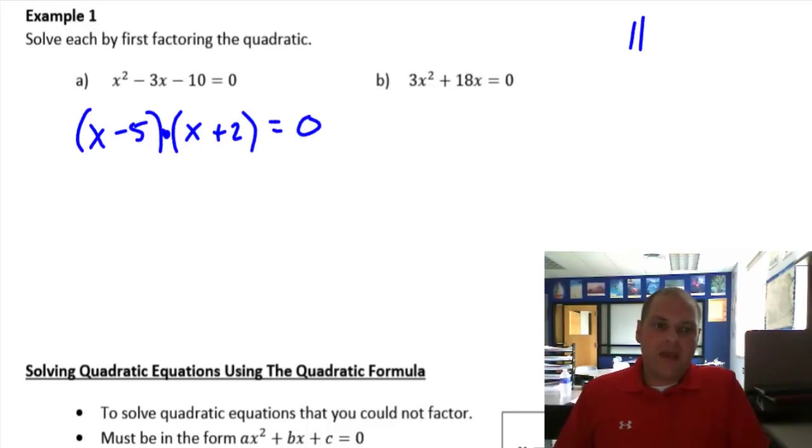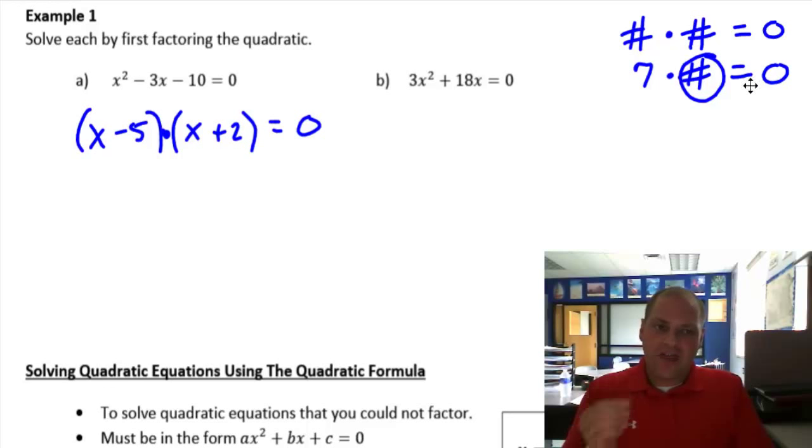When you have a number, any number, times any other number, and it equals 0, think about what that means. Think of any number in your head. I'll pick 7. 7 times a number. What does this number have to be? It has to be 0 because 7 times 0 is 0. It doesn't matter what number you picked. Whenever you want to get 0 for an answer, that's why we have to get these equations equal to 0. Whenever you want 0 for an answer, one of the factors has to be 0.